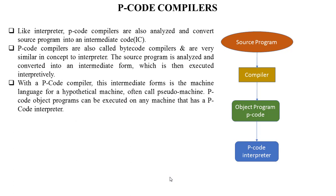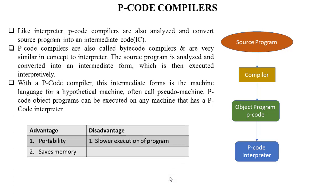The process of translation and execution using a P-code compiler: first, the source program is given to the compiler, which generates a P-code object program. This P-code is then given to the P-code interpreter. The main advantage is portability of software. It is not necessary for a compiler to generate different code for different computers because P-code object programs can be executed on any machine that has a P-code interpreter. For example, the Java compiler itself is written in Java, so it can run on any machine with a Java interpreter.